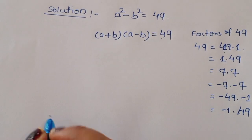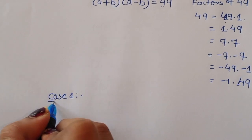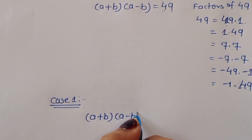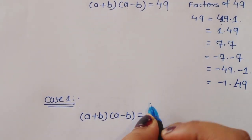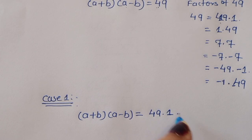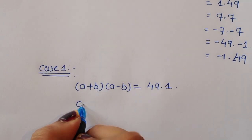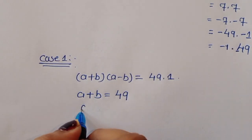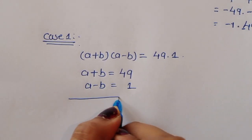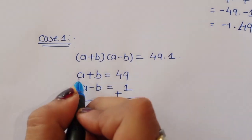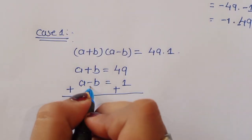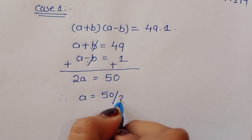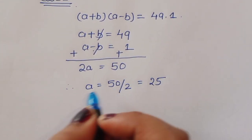Case 1: (a + b)(a - b) = 49 × 1. Comparing terms, a + b = 49 and a - b = 1. Adding these two equations, 2a = 50, therefore a = 25.